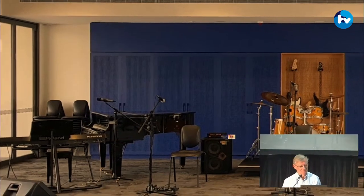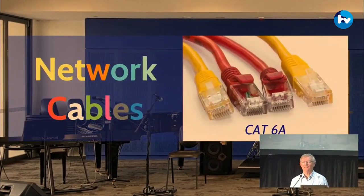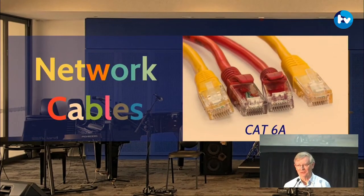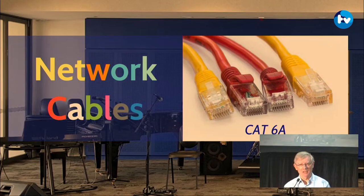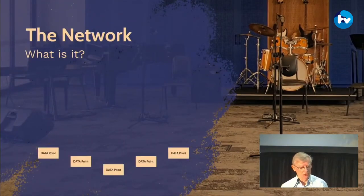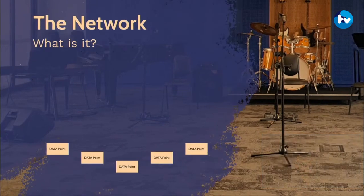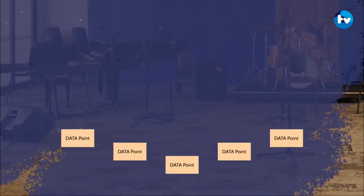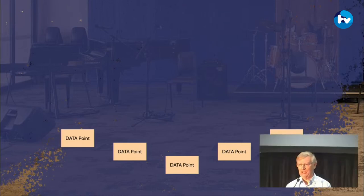So what are data points? They have coloured network cables. You get network cables — they're cheap, they're readily available, and they all look the same except for one thing: you can get them in so many colours. There may be one port, there may be two, there may be six, there may be lots of them on the same plug.